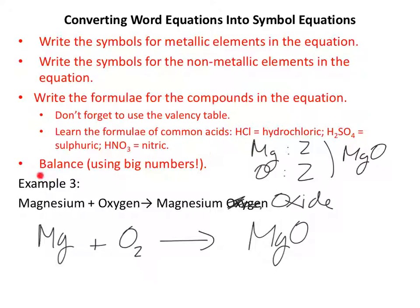Now we come on to the final stage which is balancing it using big numbers. We've got one magnesium here, one magnesium here, so magnesium is okay. We've got two oxygens and only one oxygen here, so we have to do some balancing. Let's put 2 in front of MgO. That means we've got two oxygens which nicely balance over here. But it means we've got two magnesiums. Previously we only had one. So I'll put a 2 there. And that means we've now got two magnesiums, two magnesiums, two oxygens, two oxygens, and it's all nicely balanced.